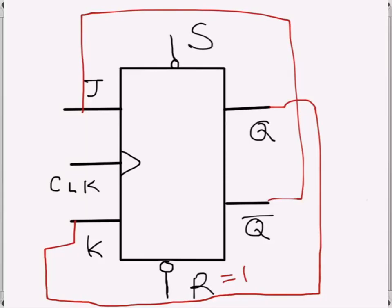A JK flip-flop is given with Q̅ connected to J and Q connected to K. So J and K will be inverted, which means it will work as a D flip-flop.